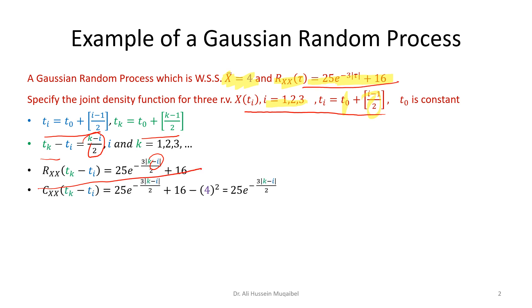And we want now to find the covariance. Remember that the autocovariance equals the autocorrelation, which is this expression here, minus the mean squared, minus 4 squared. If you subtract 4 squared, this 16 cancels, and we have the following expression for the covariance.